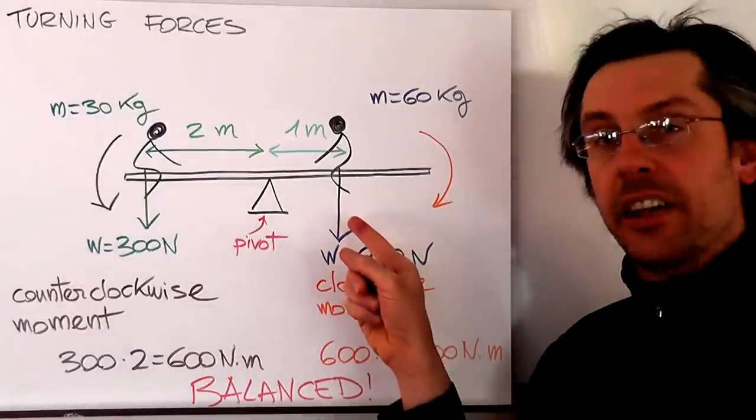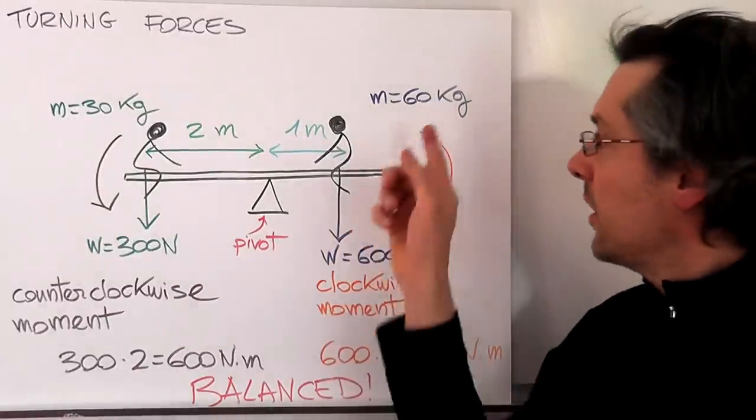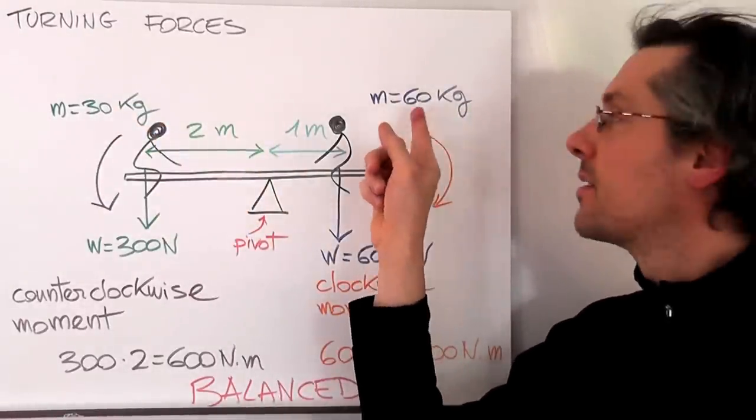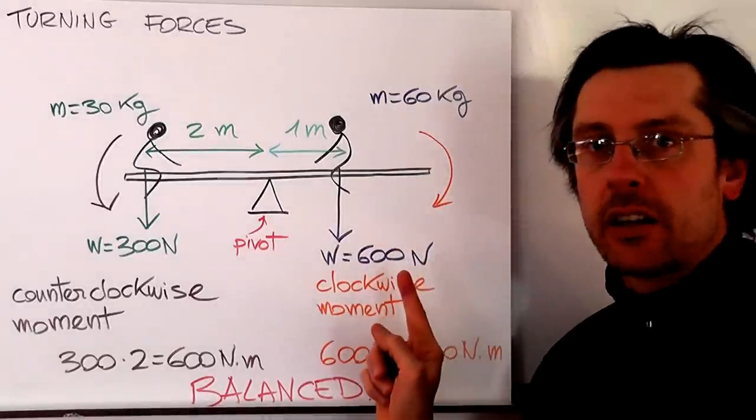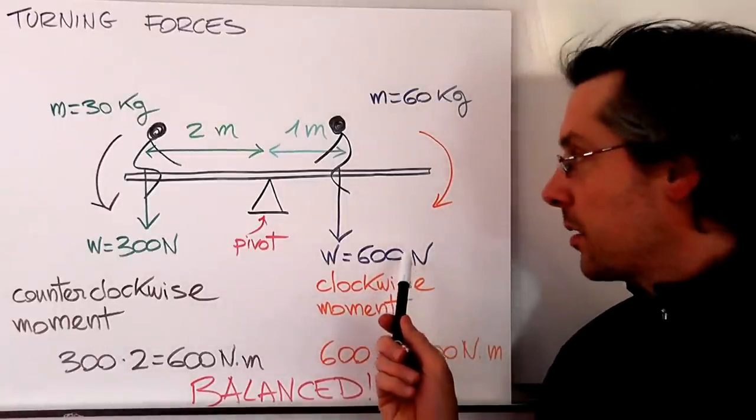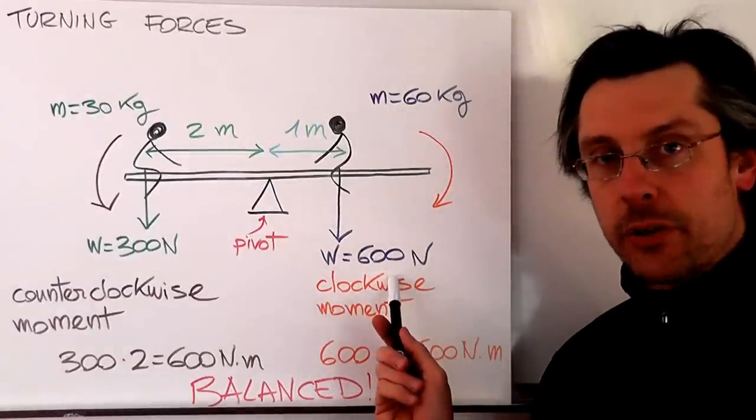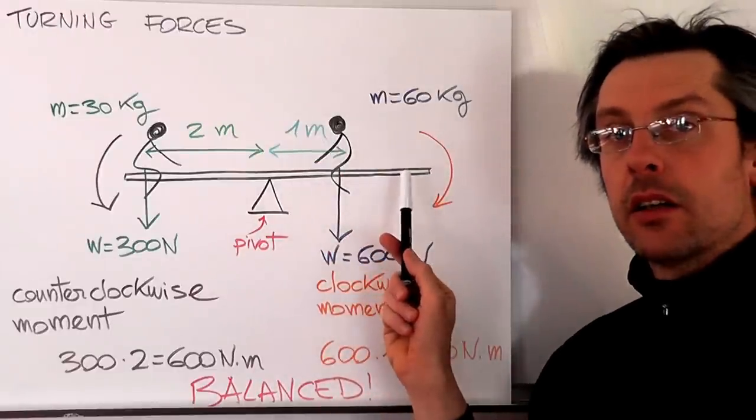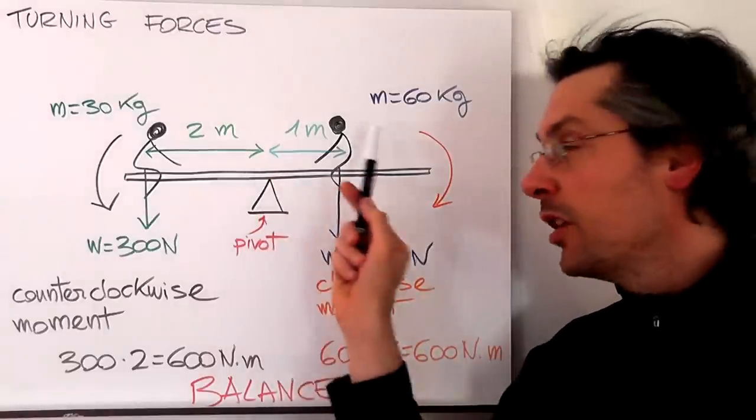Now we have another kid. He is bigger than the previous kid. Actually he is twice as big, has twice the mass, 60 kilograms. That means also, since mass and weight are directly proportional, that his weight will be also twice. 60 times 10 makes 600 Newton. Now what he does: he sits closer to the pivot, actually half of the distance from the pivot, only one meter away.